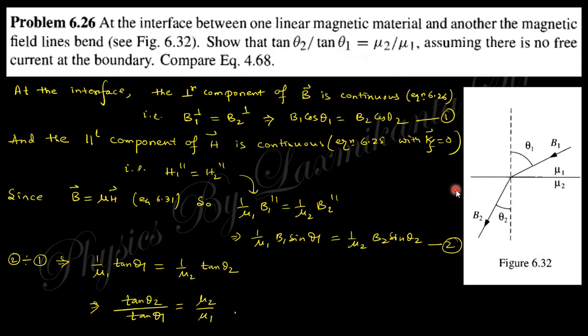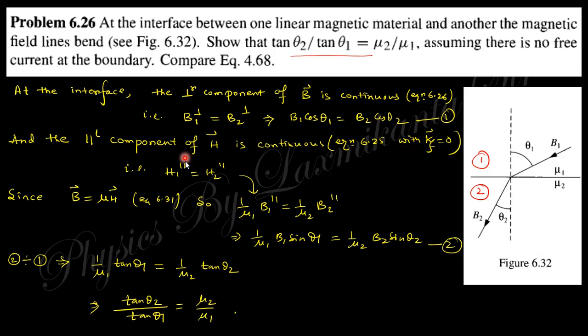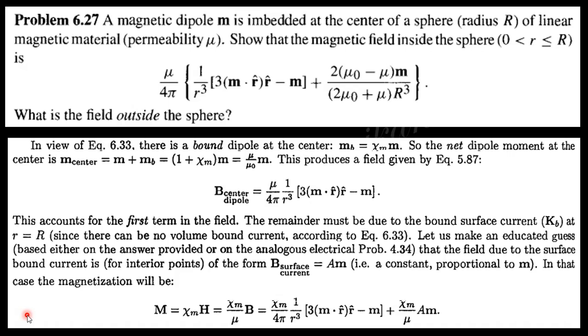At the interface between one linear magnetic material and another, the boundary conditions give: the perpendicular component of B is continuous, so B₁cosθ₁ = B₂cosθ₂. The parallel component of H is also continuous because there is no free current — without free current the tangential H is continuous; with free current it would be discontinuous. Since H = B/μ, we have B₁sinθ₁/μ₁ = B₂sinθ₂/μ₂. Dividing the two equations, we easily find tanθ₁/tanθ₂ = μ₁/μ₂.